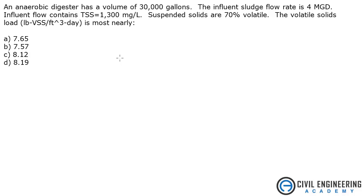The influent sludge flow rate is 4 million gallons per day. The influent flow contains TSS of 1300 milligrams per liter. Suspended solids are 70% volatile. The volatile solids load, which is pounds VSS per cubic foot per day, is most nearly.